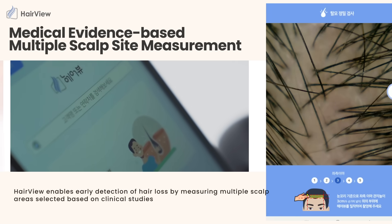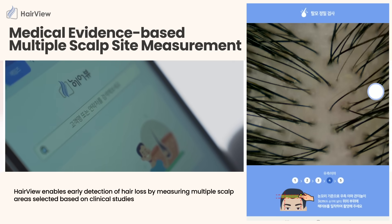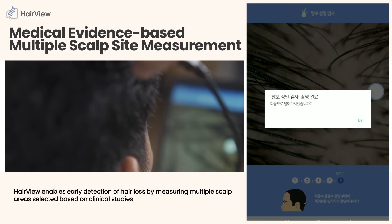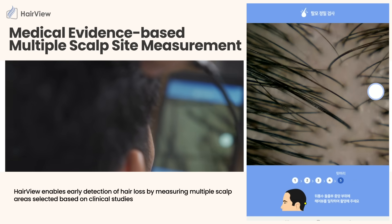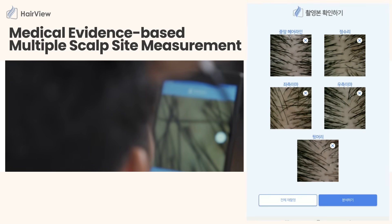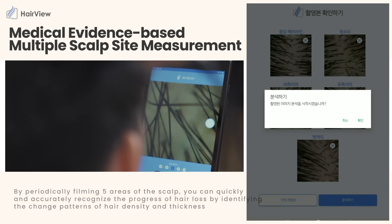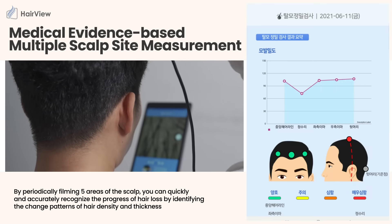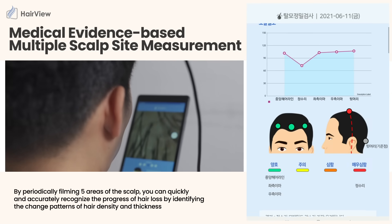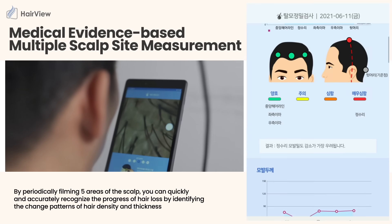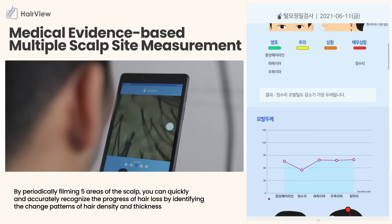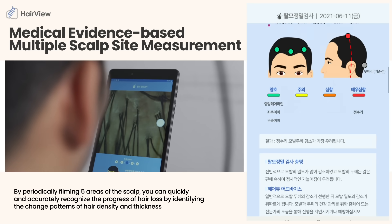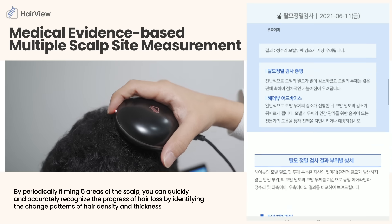HairView enables early detection of hair loss by measuring multiple scalp areas selected based on clinical studies. By periodically photographing five areas of the scalp, you can quickly and accurately recognize the progress of hair loss by identifying the change patterns of hair density and thickness.